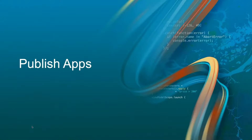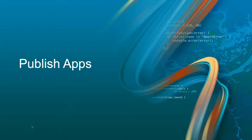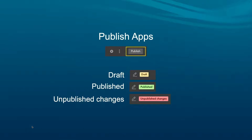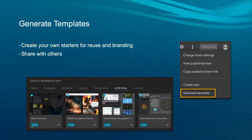Thanks Alex. Three rules: auto versus custom, style and size stay per screen, and if you want to remove content then move it to the pending list. Three rules and you can configure mobile easily. When you have done all the configuration and want to publish the app, the status in the builder could be draft, published, or unpublished changes. This app status allows you to edit and test updates without affecting the live app. You can also easily generate a template from the app as your own starter for reuse or branding.